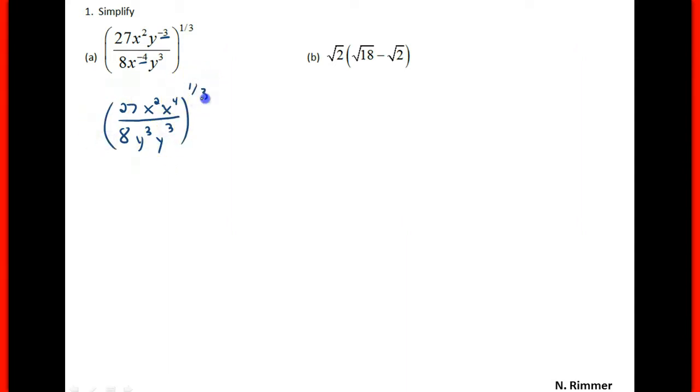We'll have the whole thing to the 1/3rd power and combine them to get 27x to the 6th over 8y to the 6th, adding the exponents because the bases are the same.